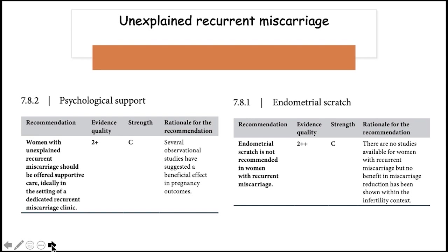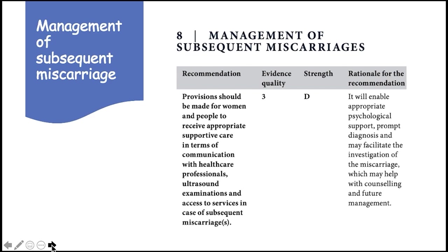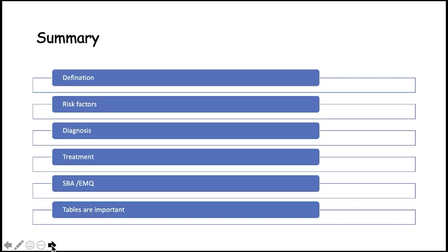For unexplained recurrent miscarriages, psychological support is very important, with evidence level 2+. Endometrial scratch has no role in these cases. Management of subsequent miscarriages should involve targeted treatment alongside communication by the healthcare professional, ultrasound examination, and psychological support.